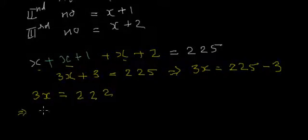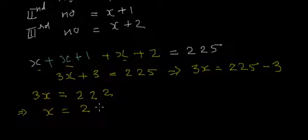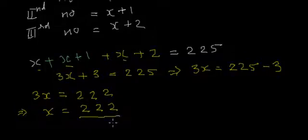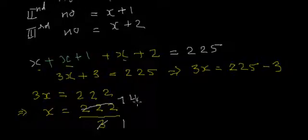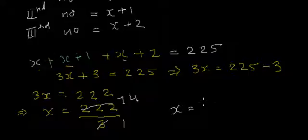That means x will be equal to 222 divided by 3. 3 ones are 3, 3 sevens are 21, and 3 fours are 12. So what we have got? We have got x is equal to 74.